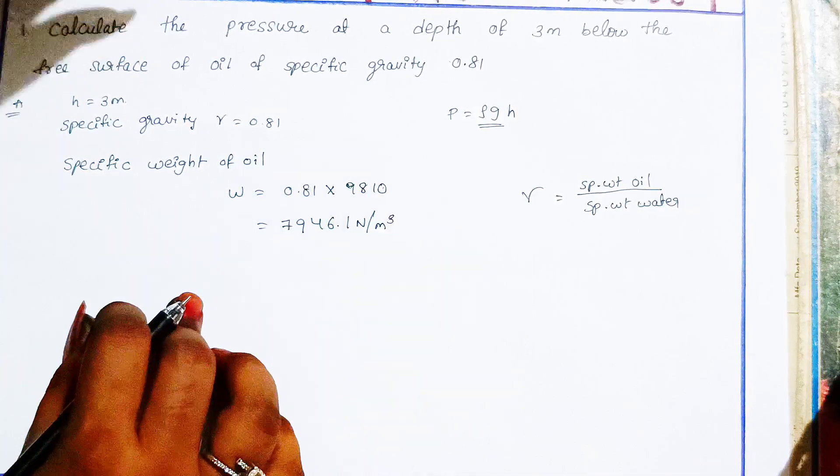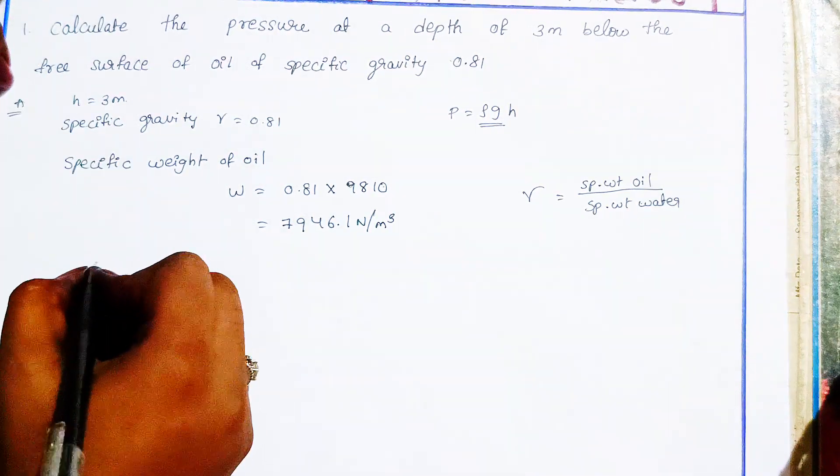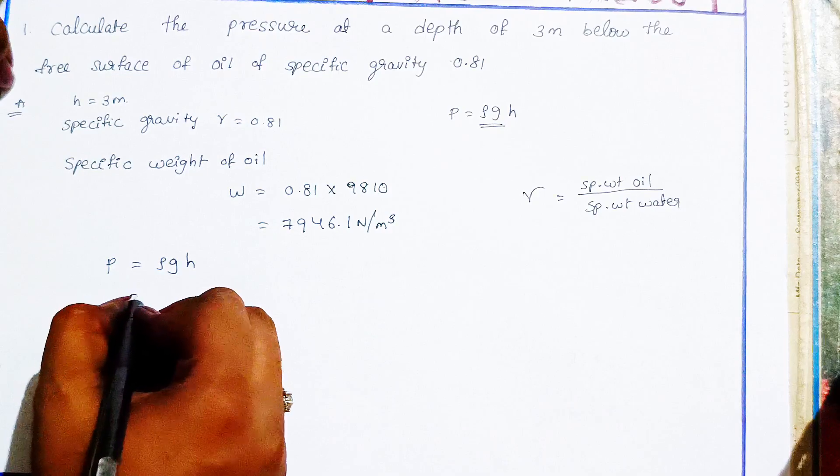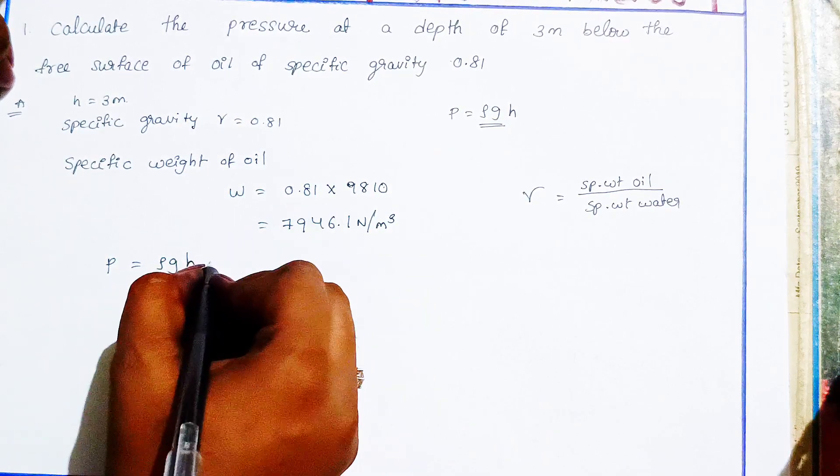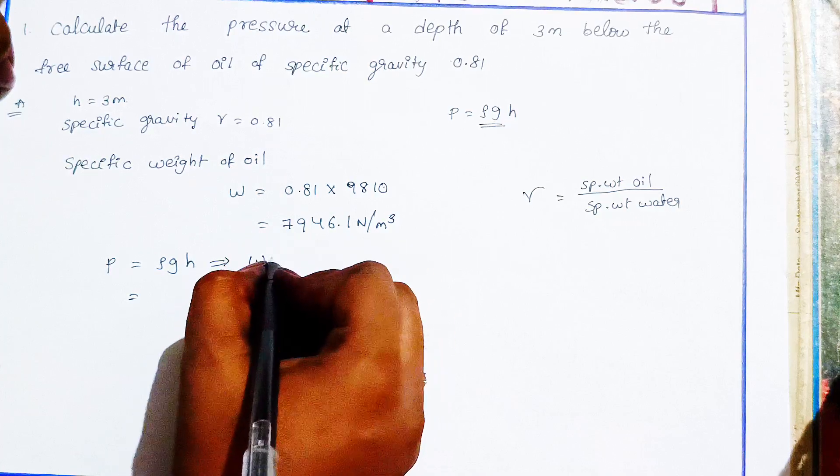Now we need to calculate P equals W h, multiplying specific weight by height.